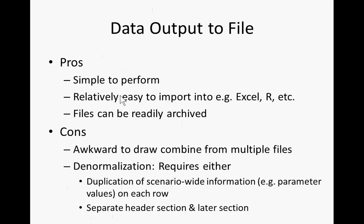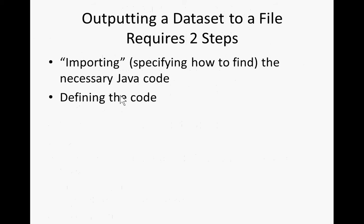Let's talk about output to a file, because this is a need that occurs to many people. Fortunately, it's very simple to perform in any project, relatively easy to import, and you can use R and other tools. It can be readily archived. The cons are that you typically need to output to different files for different data sets, and from a computer science perspective, it's not normalized — so scenario-wide information either needs to be repeated on each row or in a separate header for the file, such as metadata about which model version was used.